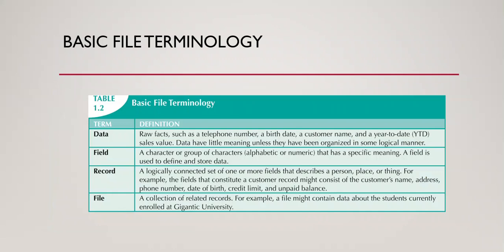When we talk about file, there are components inside. A file is a collection of related records — for example, a file about students or a file about staff. Data is any information within the file, such as a student's name or address. A field is used to define and store data — for example, the field 'matriculation number' stores a value like '0123'. A record is a logically connected set of one or more fields that describes a person, place, or thing. For example, the combination of matriculation number, name, and address for one student is one record.